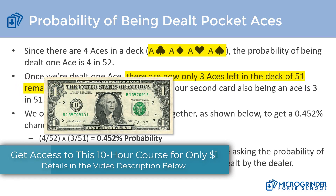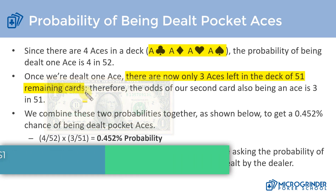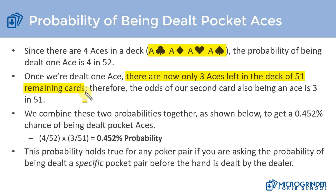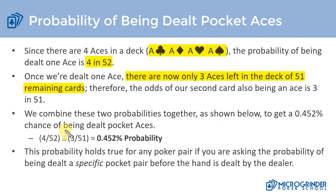Out of the cards we've seen, we've only seen one, so there are 51 cards that remain unseen. What are the odds of the second card being an ace? It's going to be three out of the 51 cards we haven't seen. So what's the probability of getting the first card and the second card? The first probability is four out of 52. The second is three out of 51.